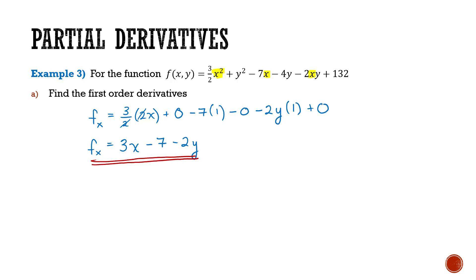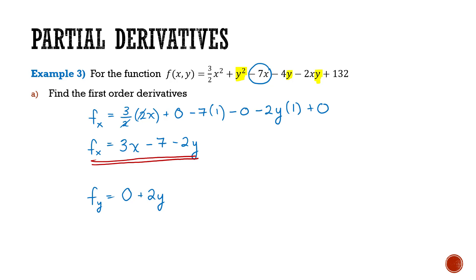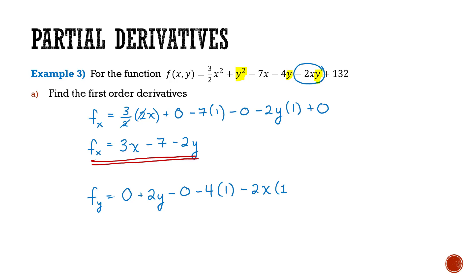For the derivative with respect to y, y terms change and x is treated as a constant. The term (3/2)x² is a constant, giving 0; y² gives 2y; −7x is a constant, giving 0; −4y gives −4; −2xy gives −2x (coefficient to y); and 132 gives 0. Simplifying, we get fy = 2y − 4 − 2x.